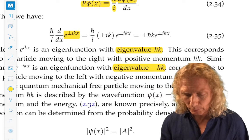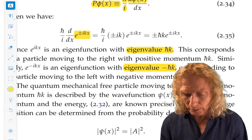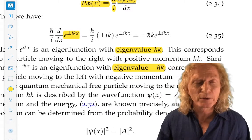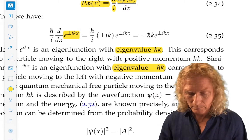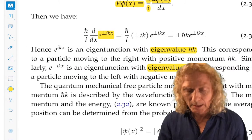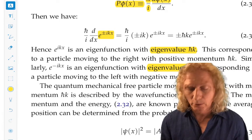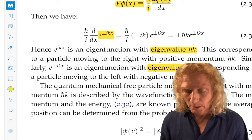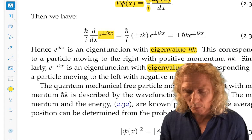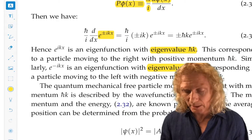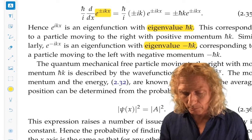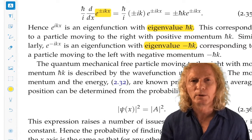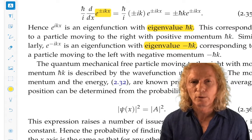So e to the ikx would correspond to a particle moving to the right with positive momentum h-bar k. And e to the minus ikx corresponds to a particle with momentum minus h-bar k moving to the left. Keep this interpretation in mind. It's going to come back over and over in this chapter.